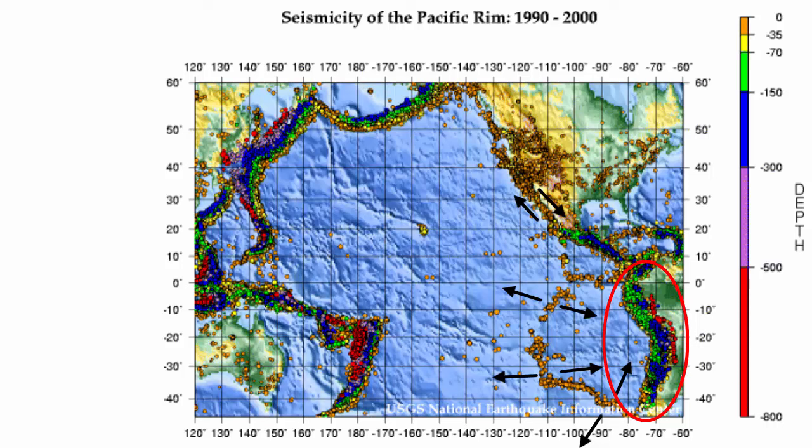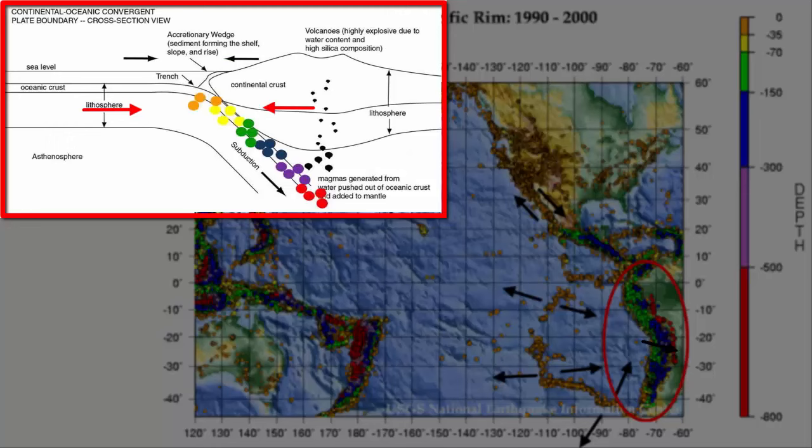As the ocean plate subducts under South America, it descends to deeper and deeper depths. The shallowest frictional sticking and consequent release will happen at the top of the subduction zone. Further down in the subduction zone, you'd expect deeper sticking and deeper quakes.